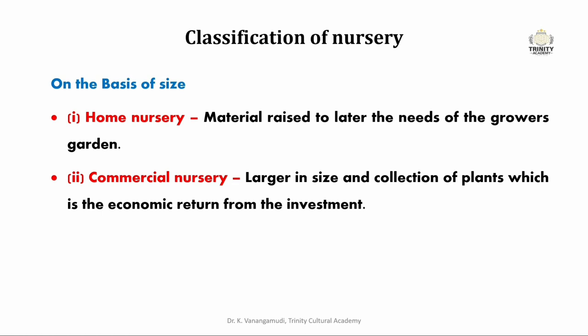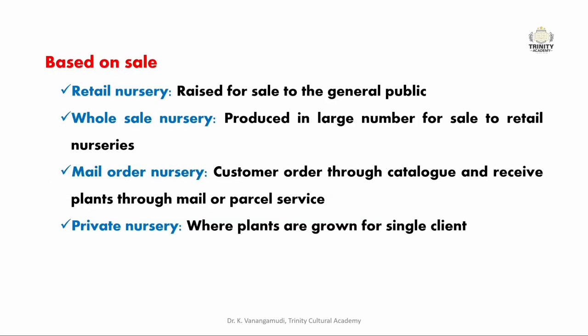Commercial nurseries are larger in size, mostly established to earn money, and require larger area as well as large investment. Based on type of sale, nurseries are classified into four types: retail nursery — plants raised for sale to the general public, small and located in towns; wholesale nurseries — produced in larger numbers for sale to retail outlets in bulk quantities; mail order nursery — a specialized wholesale nursery where customers order through a catalogue and receive plants through mail or courier service; and private nurseries — where plants are grown exclusively for a single client.